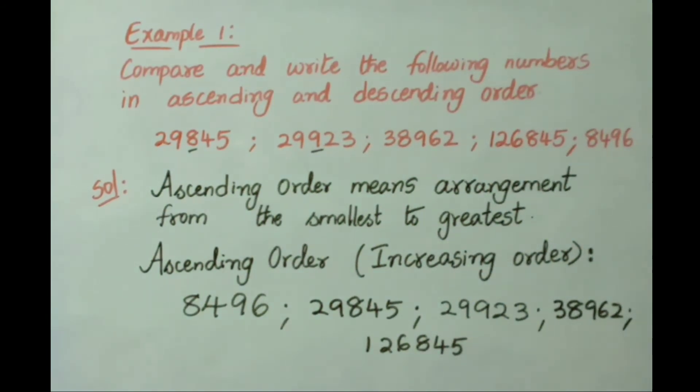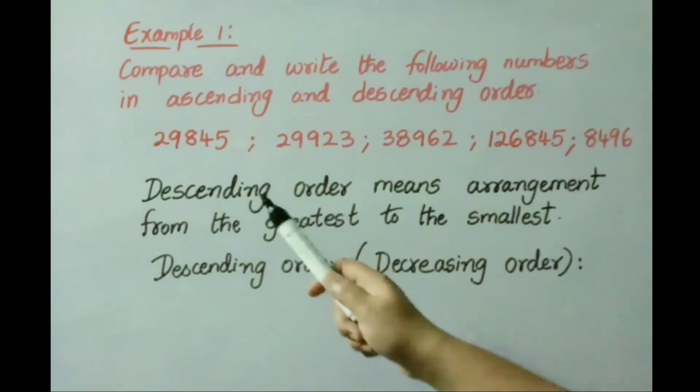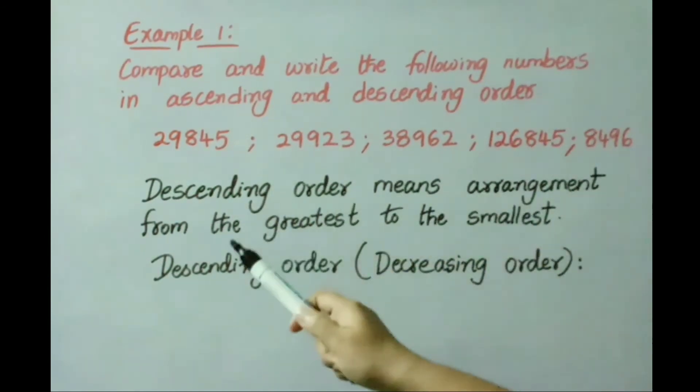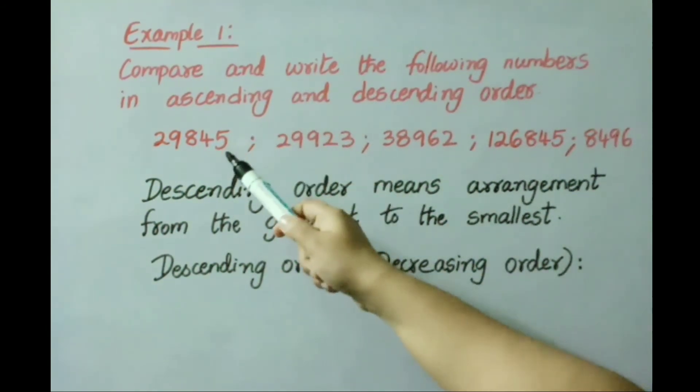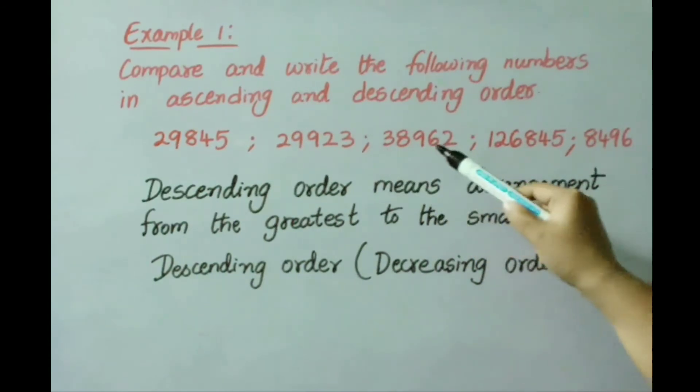Now let us see descending order. Descending order means arrangement from the greatest to the smallest number. Descending order can also be called decreasing order. See the numbers here: 5-digit number, 5-digit number, 5-digit number, 6-digit number and 4-digit number. So which is greatest now? 6-digit number is greatest, so write that number: 1,26,845.